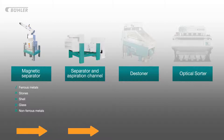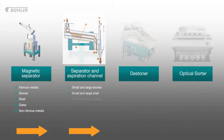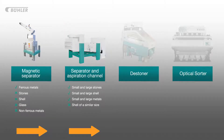The next removal machine they approach is the separator and aspiration channel, which removes foreign bodies that are either smaller or larger than the natural almonds. This means that small and large stones, shell and metals should be removed, but any items of similar size to the natural almonds will still remain in the good product.